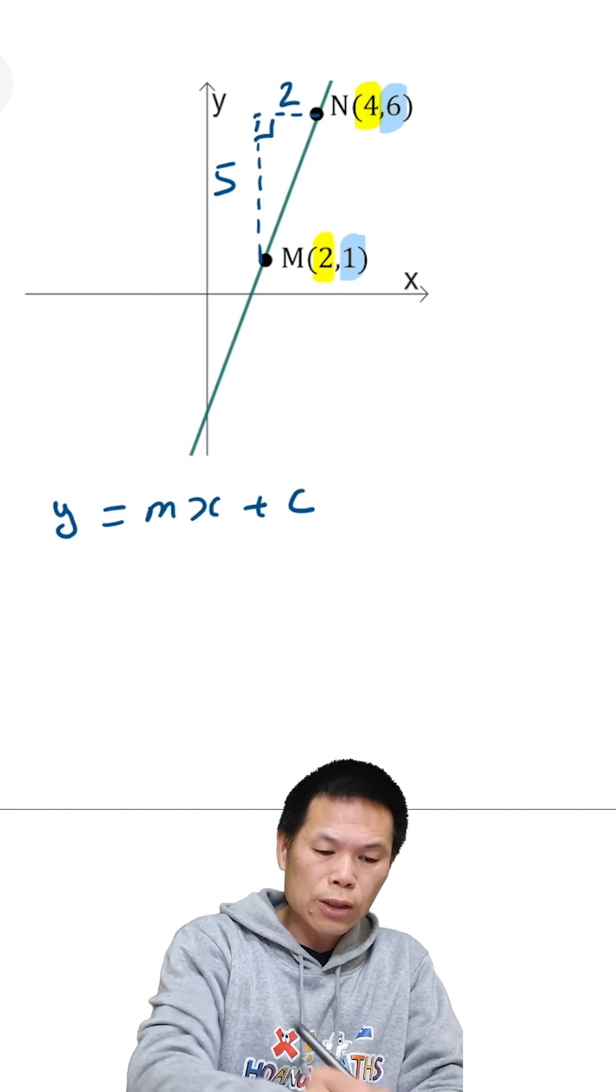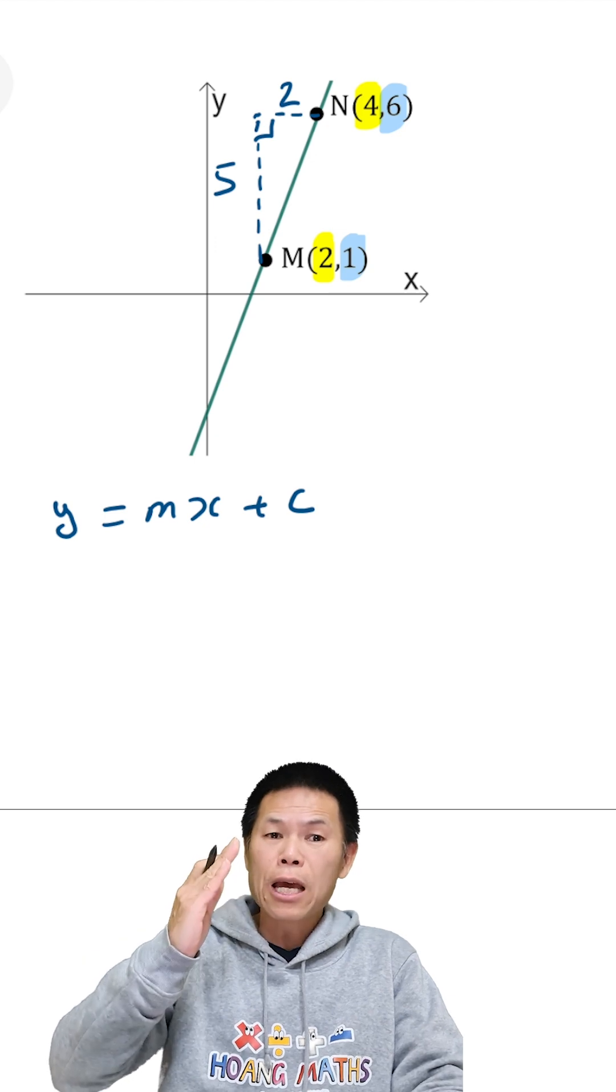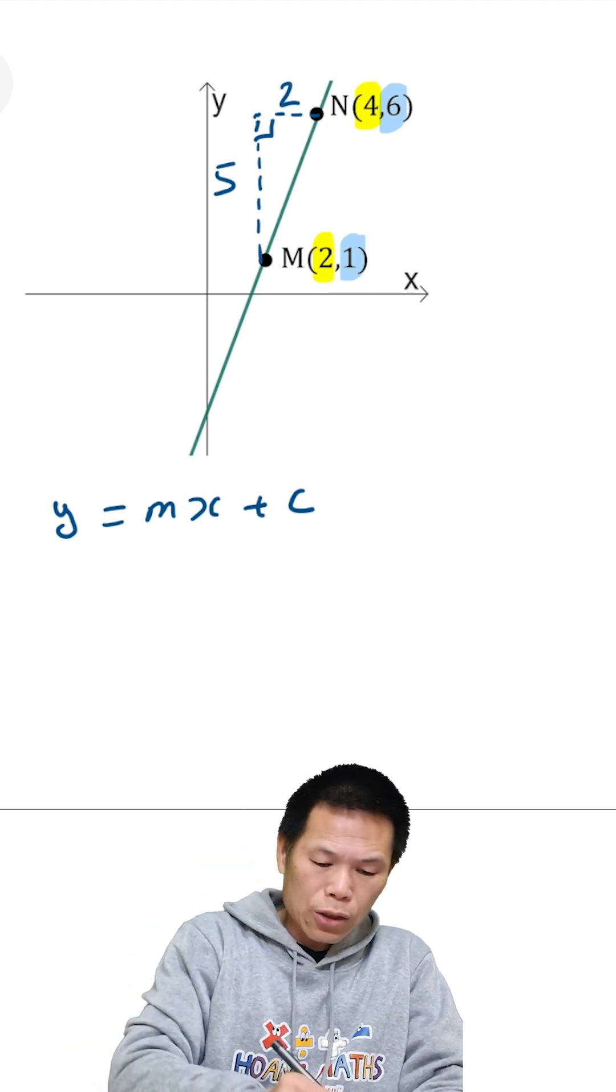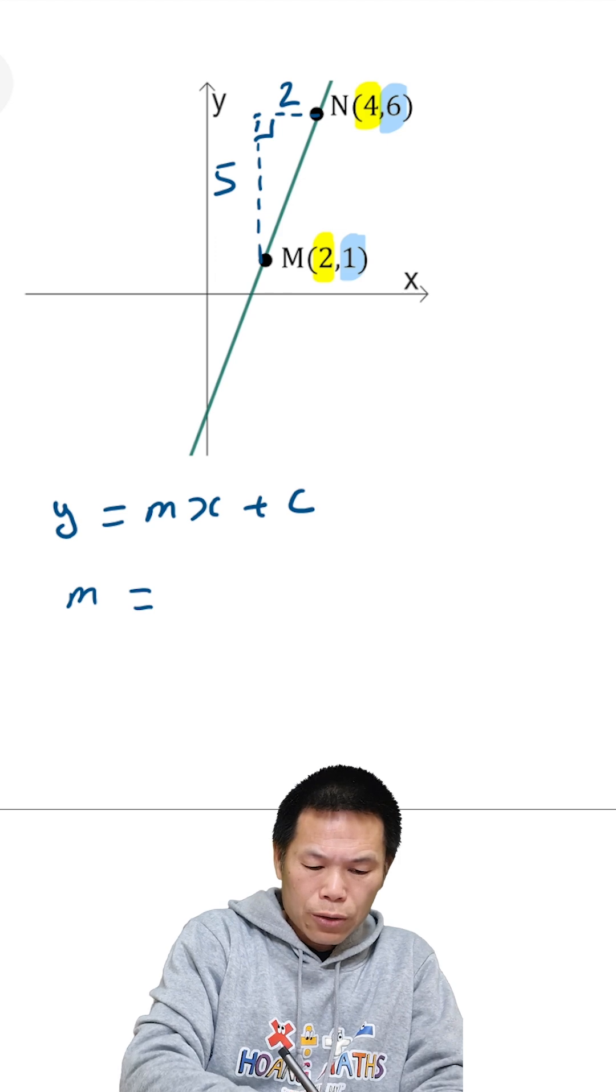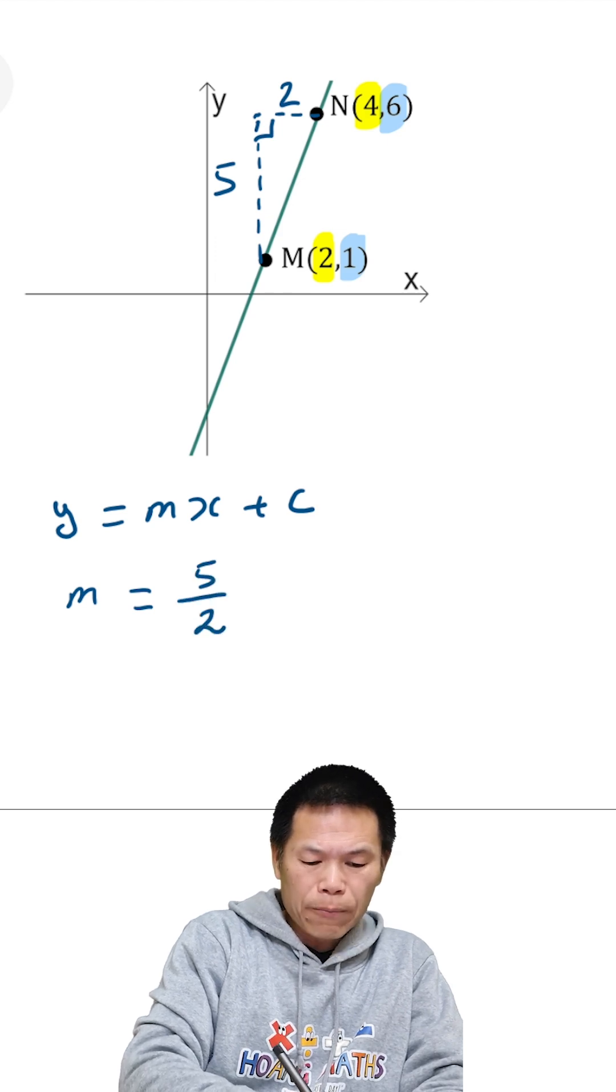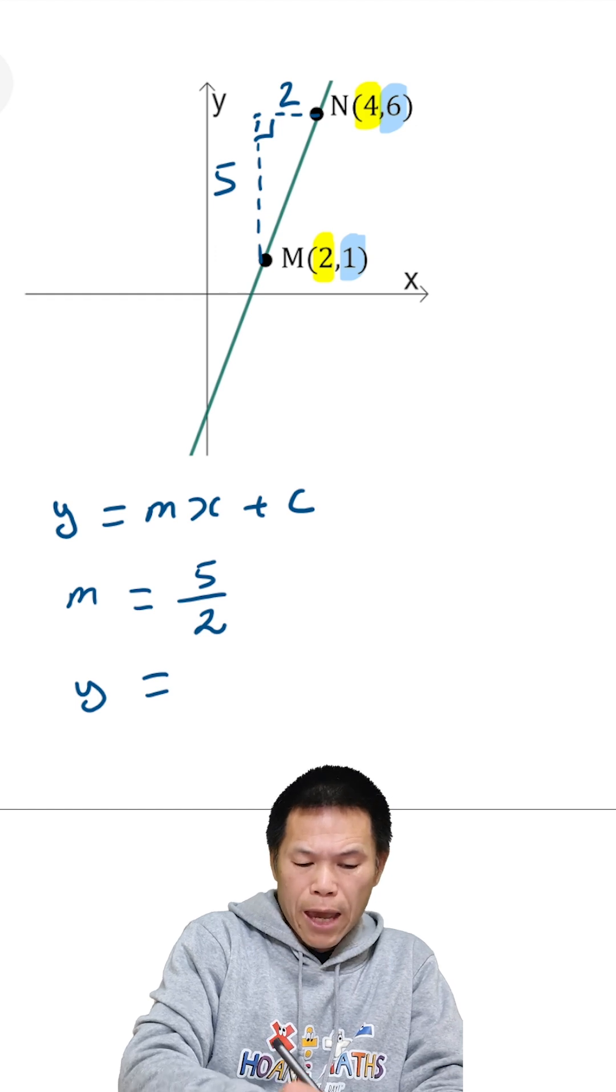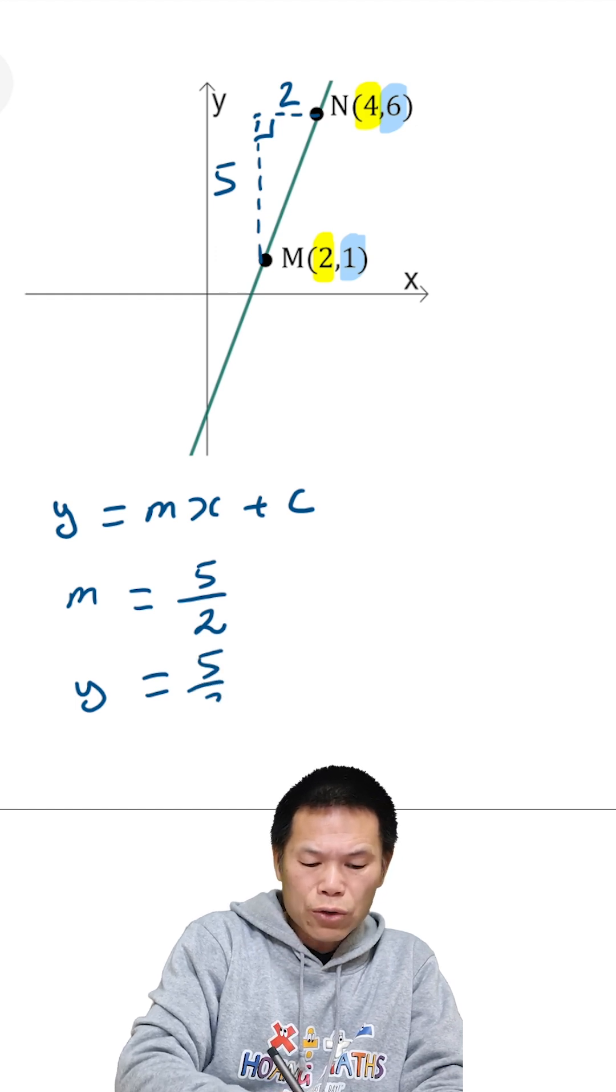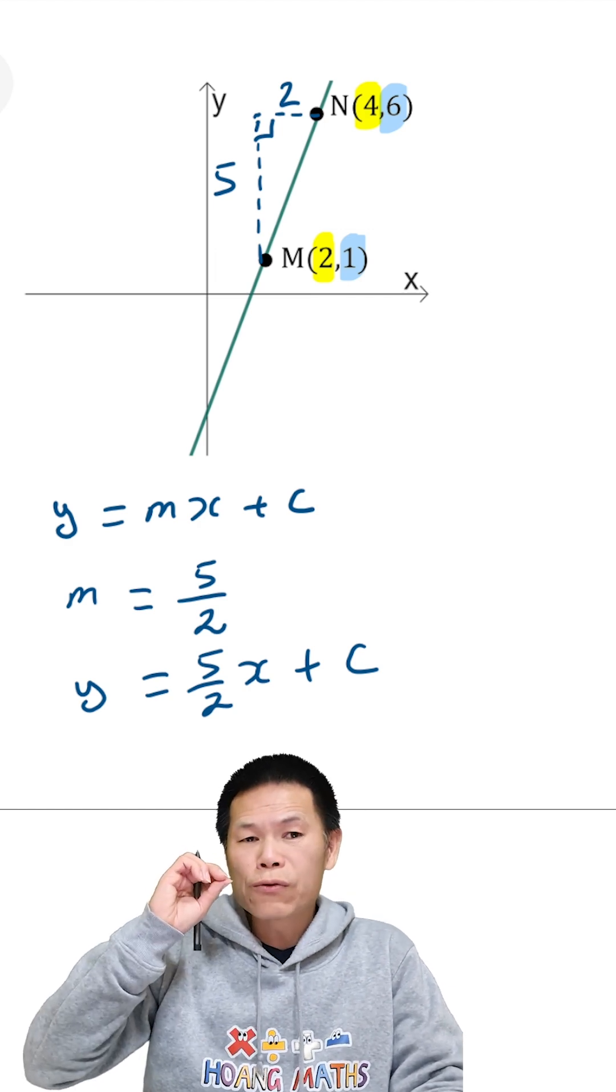Therefore, the gradient is positive because it's heading like this. We have positive gradient, so m is equal to rise over run. That means y is mx, which is five over two x plus c.